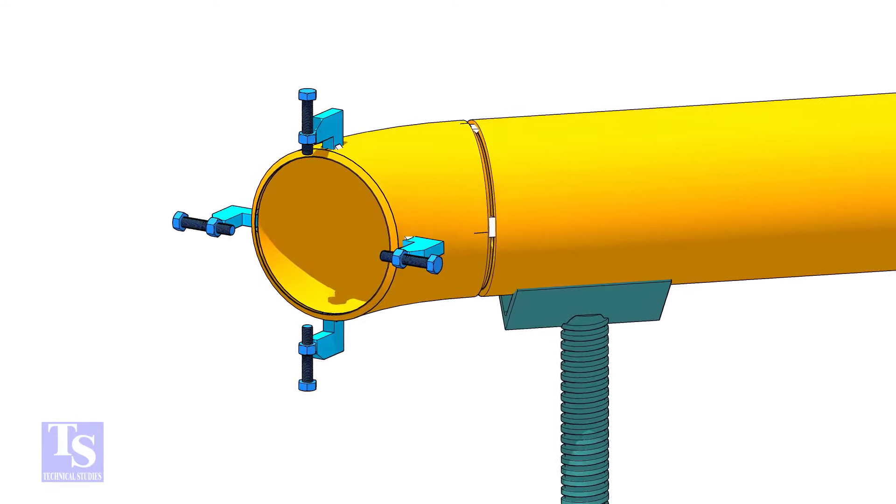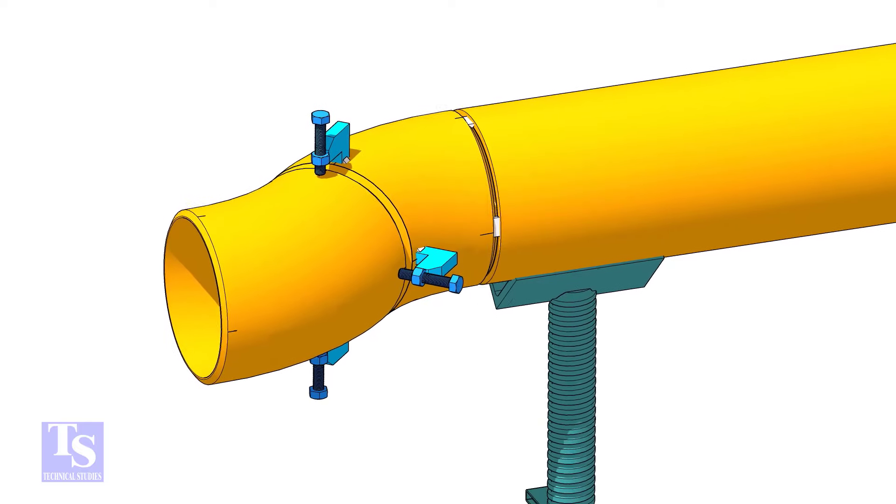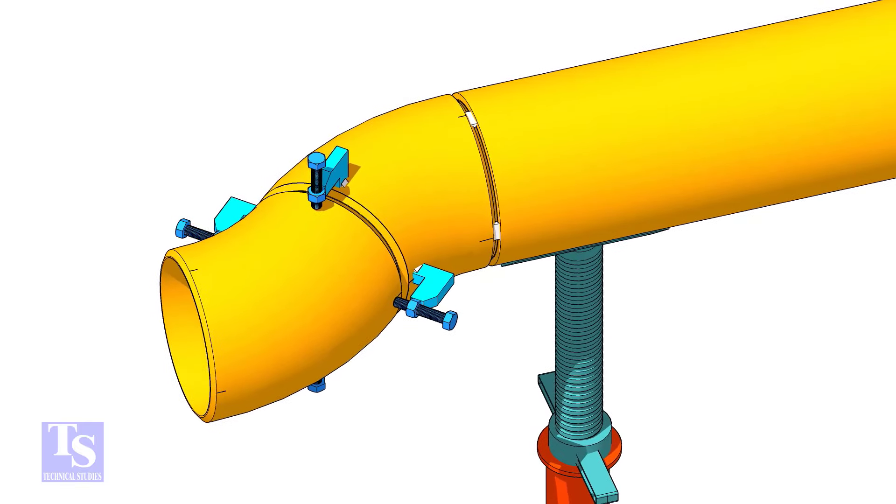Tack weld four jack bolts as shown. Put the other elbow in the jack bolts and match the center lines of both elbows.